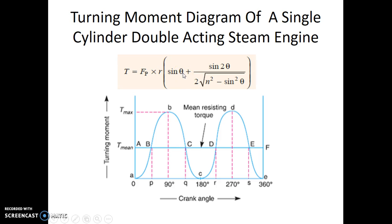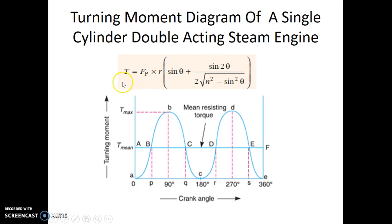As theta is varying from 0 to 90 degrees, 180 degrees, and 360 degrees, the value of torque also will be changing accordingly. At the instant when theta is equal to 0, we find that the value within this bracket is equal to 0, and therefore the torque also will be equal to 0.